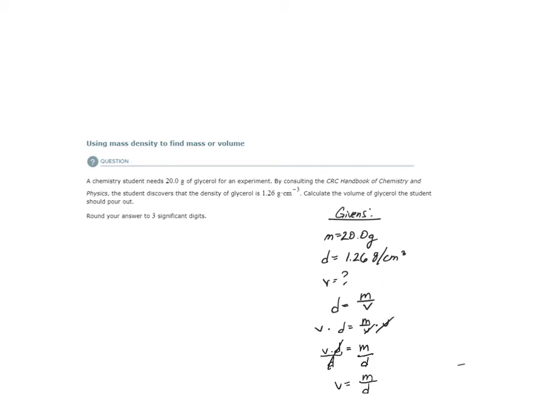Perfect. So now we've manipulated the equation to solve for volume. And we also have these other unknowns. So let's look. We have the mass. We have the density. We can find the volume.